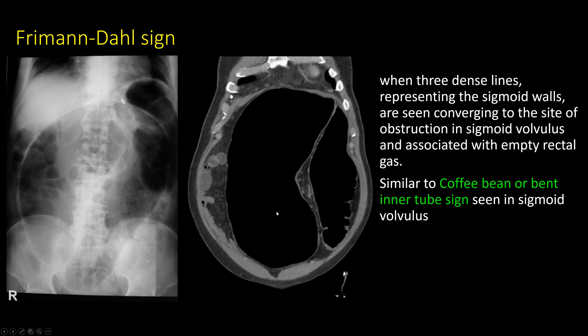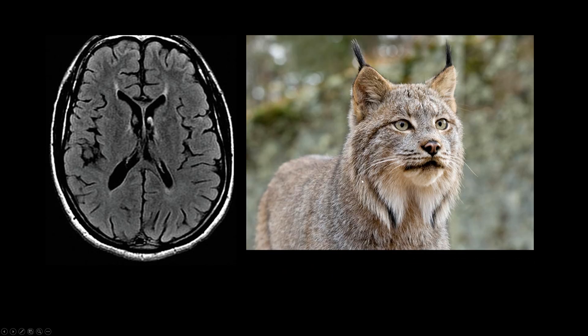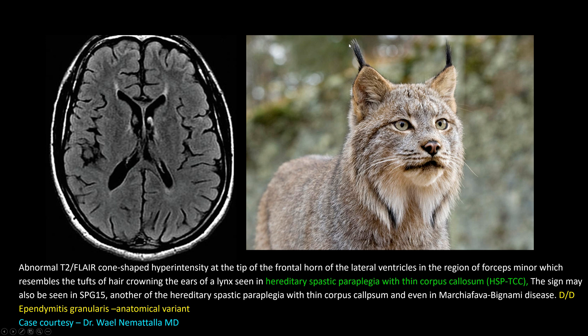Next case: there is thinning of the corpus callosum in the splenium and genu, and cone-shaped hyperintensities adjacent to the frontal horns. This resembles the tuft of hair adjacent to the ears of a Canadian lynx — hence the ear of lynx sign. This is a North American cat with a tuft of hair at the end of its ears, resembling the hyperintense areas adjacent to the frontal horns. This sign is classical for hereditary spastic paraplegia with thin corpus callosum, and can also be seen in SPG15. It is rarely seen in Marchiafava-Bignami disease. A close differential is ependymitis granularis, which is an anatomical variant.